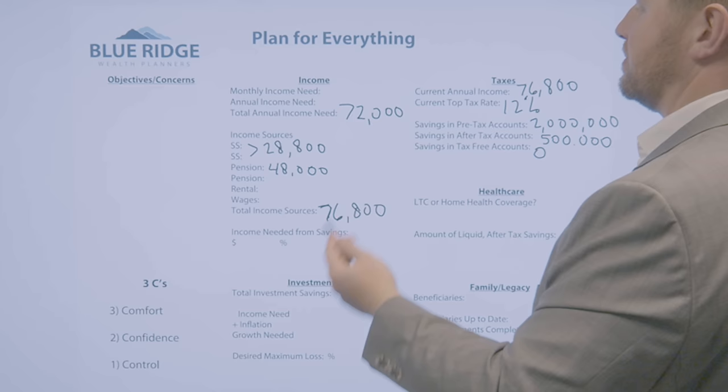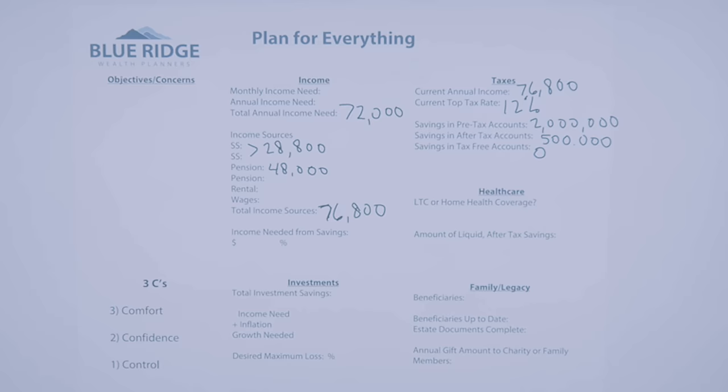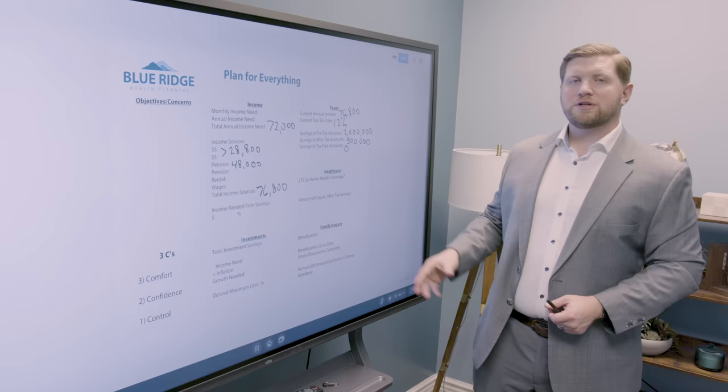All right. So as we look at this situation and start to fill in our chart here, we've got the annual income rate of $6,000 a month or $72,000, more than that provided between pension and social security. So $76,800 is their current income, which would put their top tax rate today at 12%. So as we look at this, $2 million of pre-tax money, $500,000 of after-tax money, and then $0 in tax-free accounts like a Roth IRA or properly structured life insurance. So what we're trying to do is take this very top heavy picture and start to migrate those monies down to where they're in a much more tax favorable position as these people move forward.